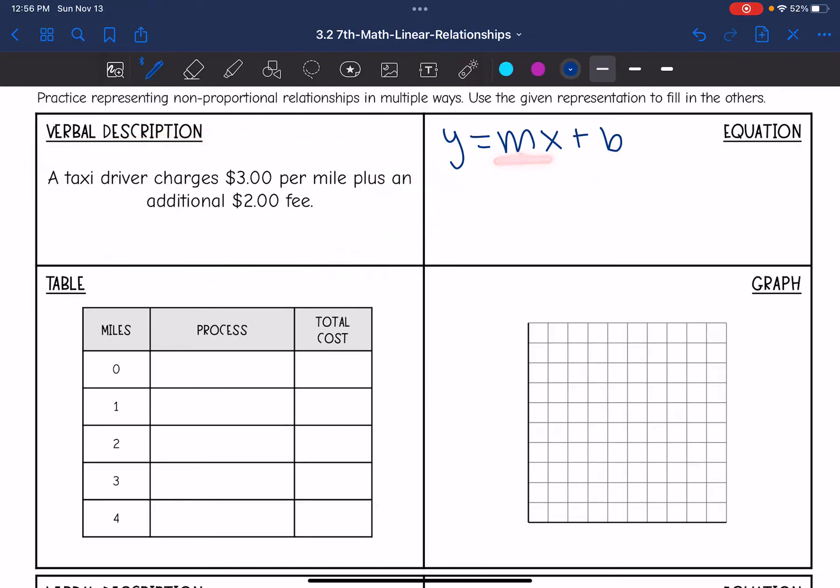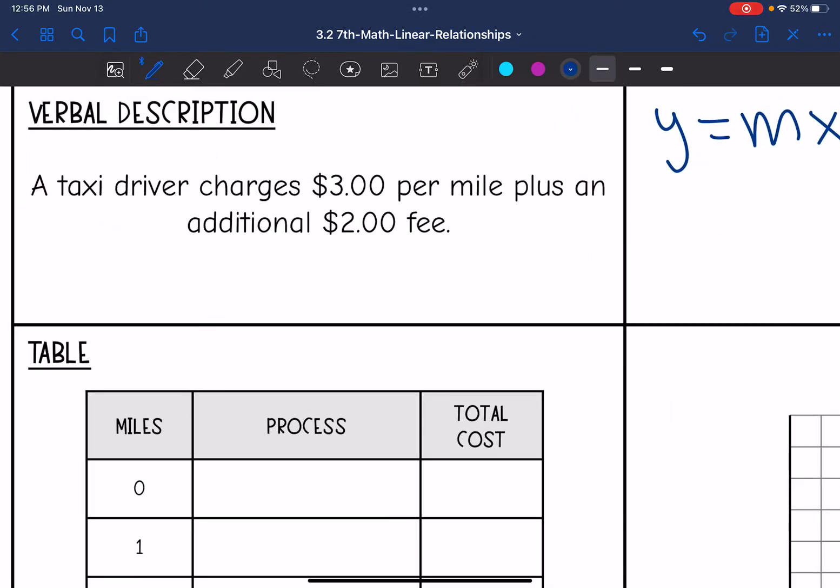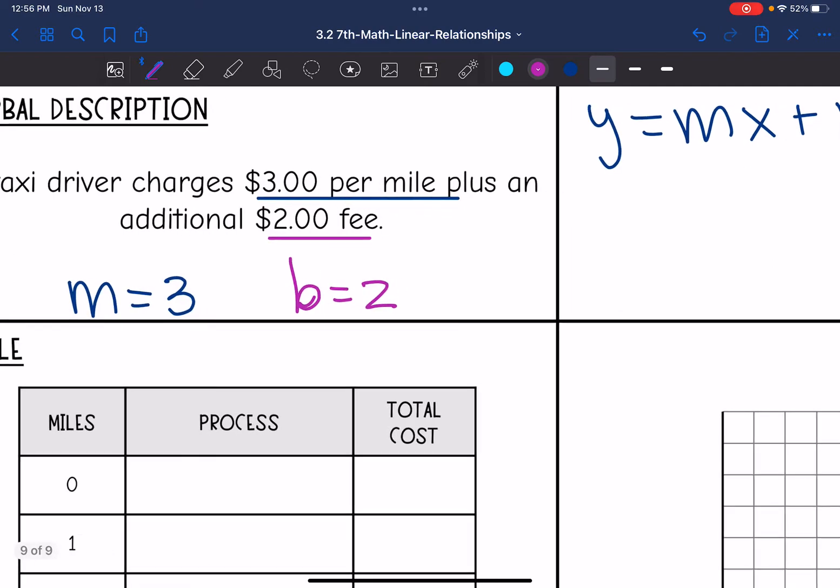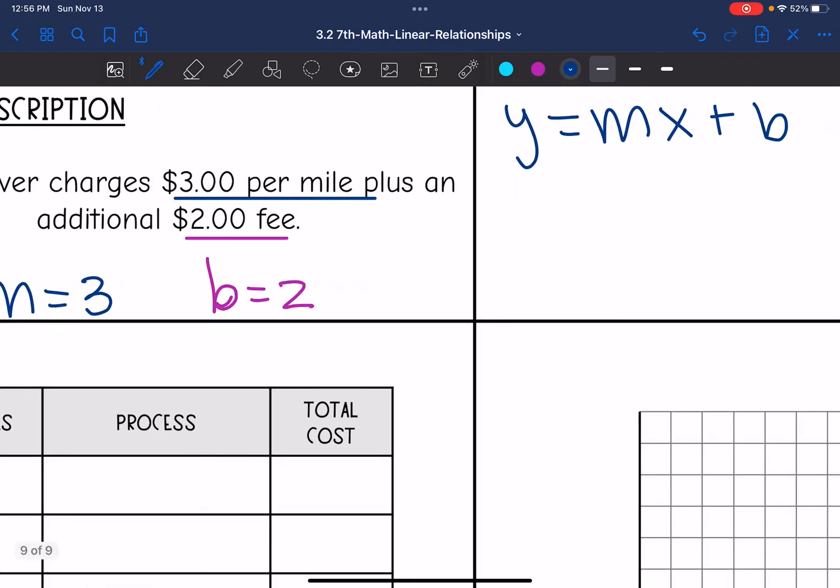So if we look at this verbal description, we should be able to identify m and b from it. m is the rate of change. It's going to be the thing that is changing more, which would be the $3 per mile, because that's going to happen every mile. And then our b value is going to be that $2 fee. They're just going to pay that once and then add the $3 per mile after that. So the equation in y equals mx plus b form will be y equals 3x plus 2.